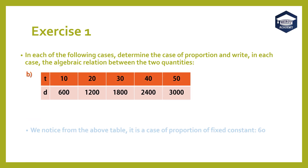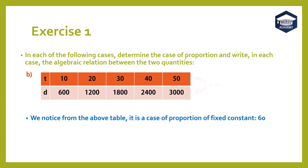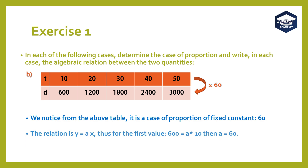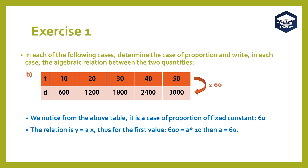Part B. We notice from the above table it is a case of proportion with fixed constant 60. The relation is y equals a times x. Thus for the first value, 600 equals a times 10, then a equals 60.